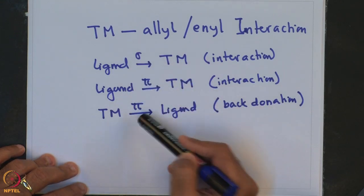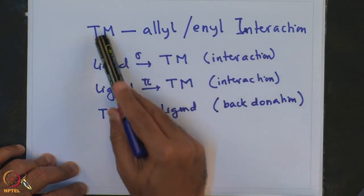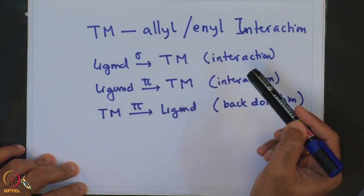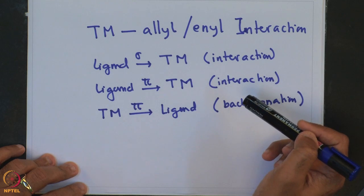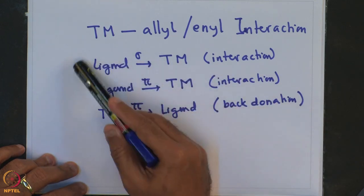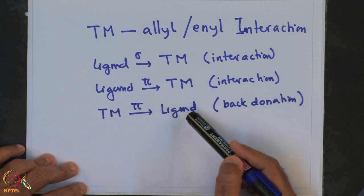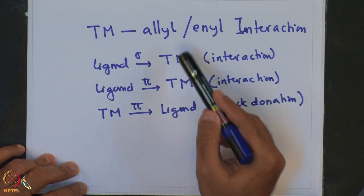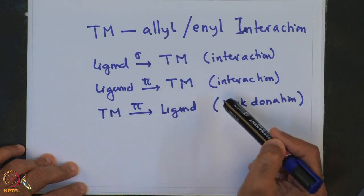There is also a transition-metal-to-ligand interaction which is of pi type, called back donation, because in back donation there is a reversal of donation from transition metal onto the ligand. These three interactions — the first two called forward donation and the third called backward donation — constitute the transition metal-allyl interaction. With that said, in this lecture we intend to look at various preparative methods for preparing transition metal allyl complexes.